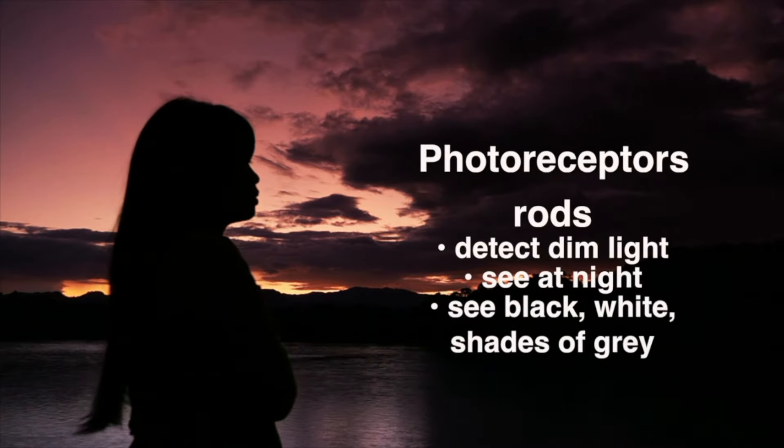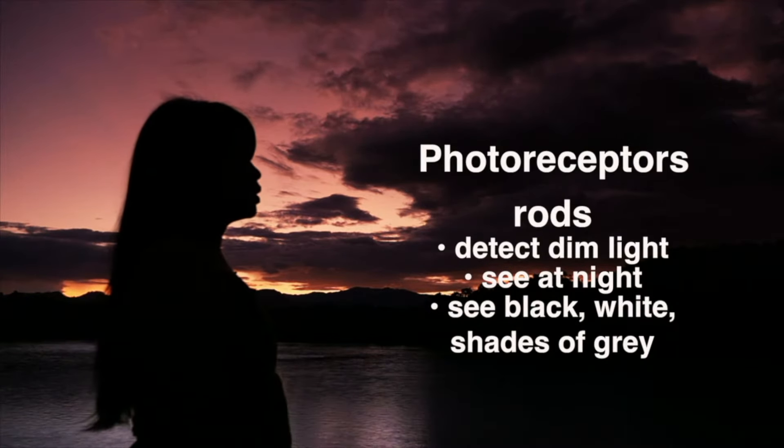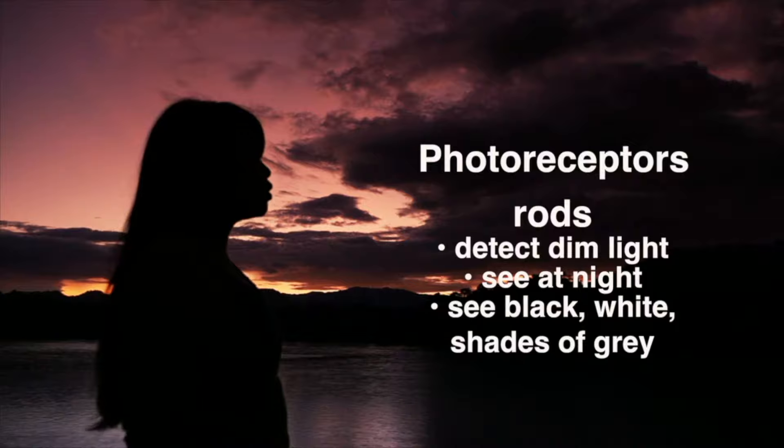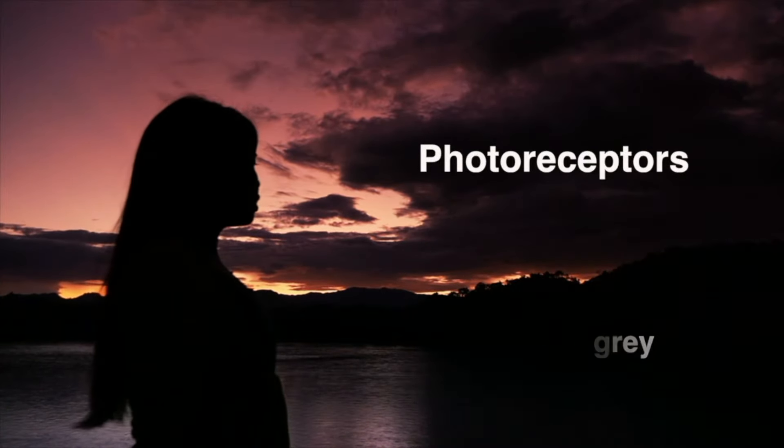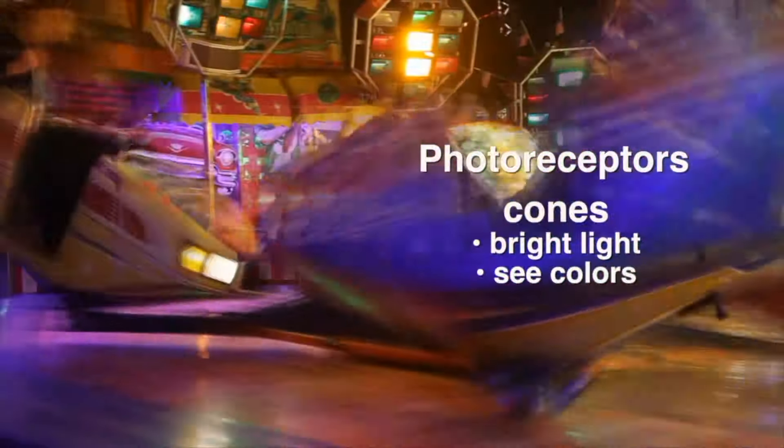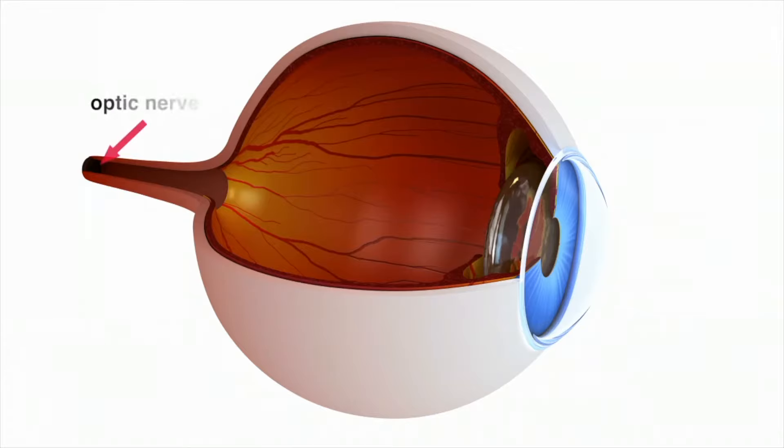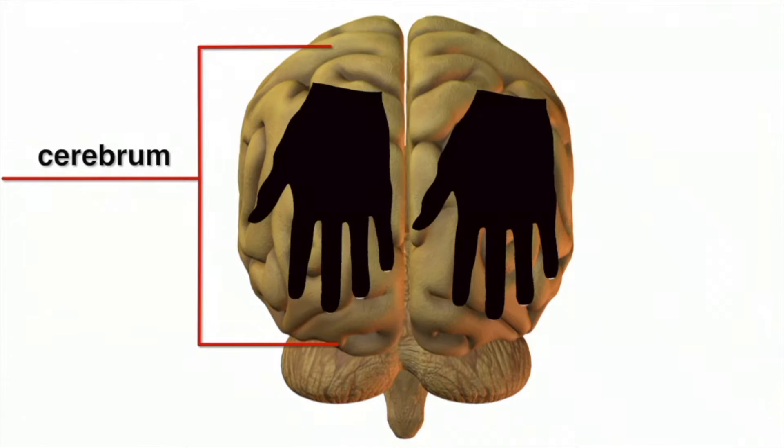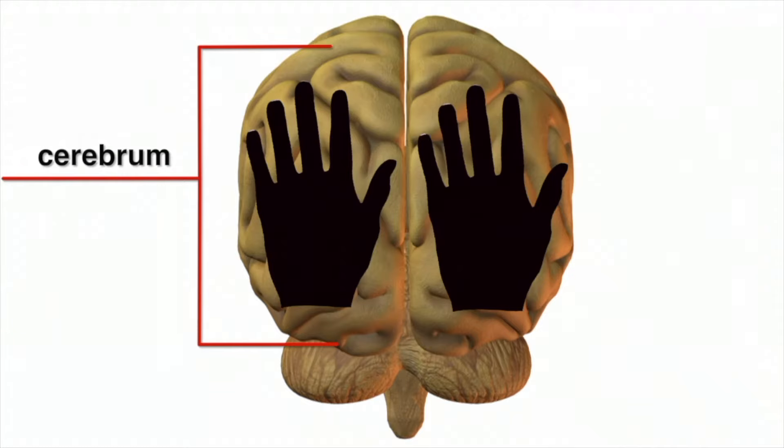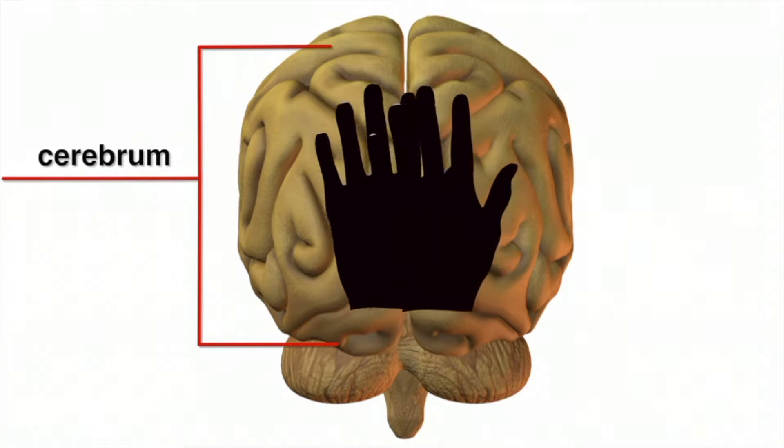There are rods, which can detect very dim light. Rods are important for seeing at night. They help you see black, white, and shades of gray. The other kind of photoreceptors are called cones. They work well in bright light and allow us to see colors. When light energy strikes the rods and cones, it triggers a nerve impulse. This impulse travels through an optic nerve, one for the left eye and one for the right. The impulse travels to the cerebrum, where two things happen. The cerebrum turns the image right side up and combines the image from both eyes to produce one image.